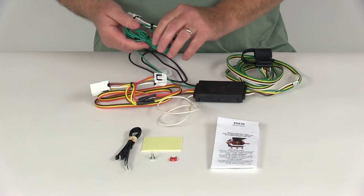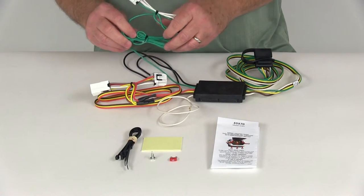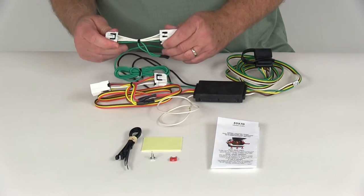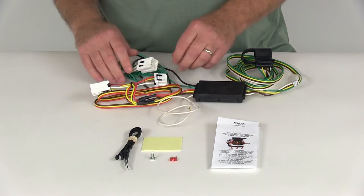Now you'll see this longer length of green wire, this is for the passenger side. Run this over to the passenger side, same way behind the taillight, unplug it, plug this inline to it.